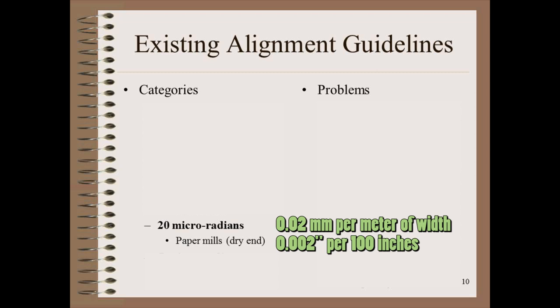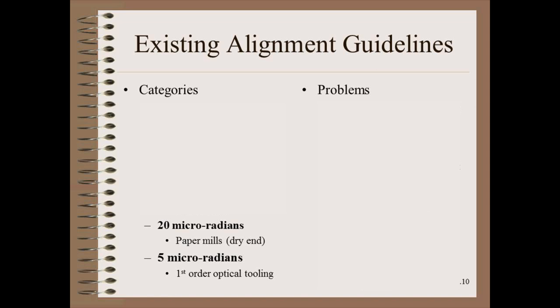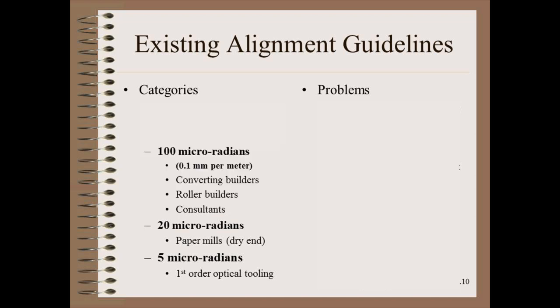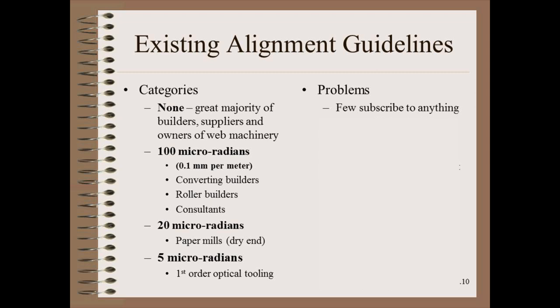While the converting industry is much larger, it seldom has anything to say about alignment. When it does — such as from a few machine builders and roller suppliers — an often-quoted guideline is 100 micro-radians or 0.1 millimeters per meter. However, the great majority of builders, suppliers, and owners of web machinery alike are silent on the subject of alignment.